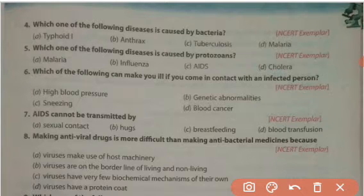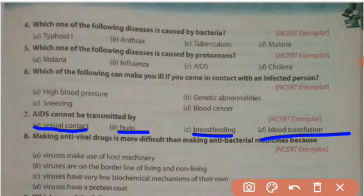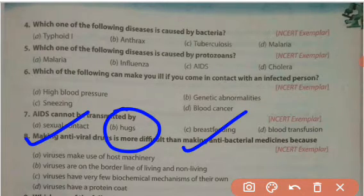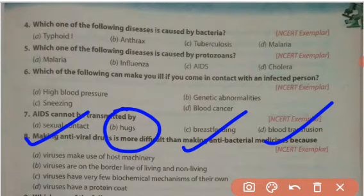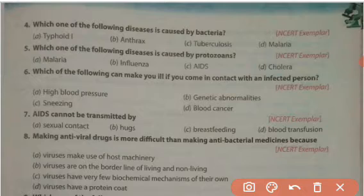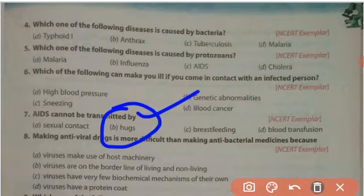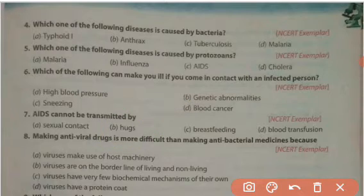AIDS cannot be transmitted by which of the following? Options are sexual contact, hugs, breastfeeding, and blood transfusion. The right answer is hugs. AIDS can be transferred by sexual contact; breastfeeding can transfer the virus from mother to child; blood transfusion can transfer the virus from an infected to a healthy person — but hugs cannot transfer the AIDS virus.